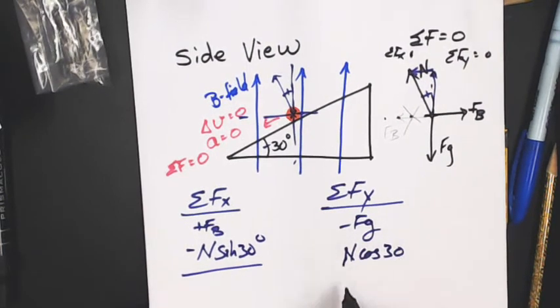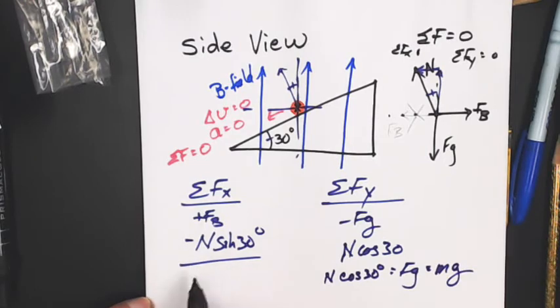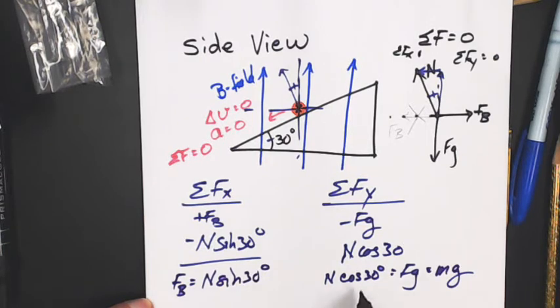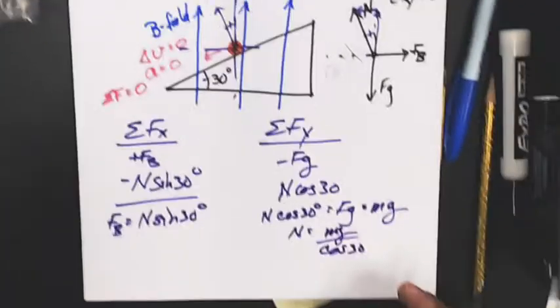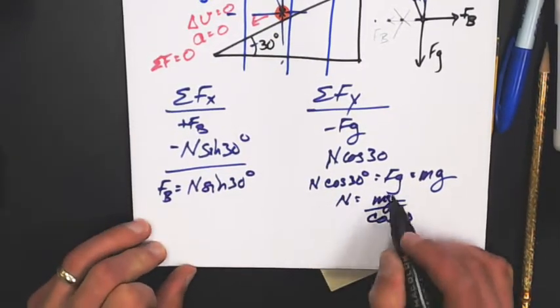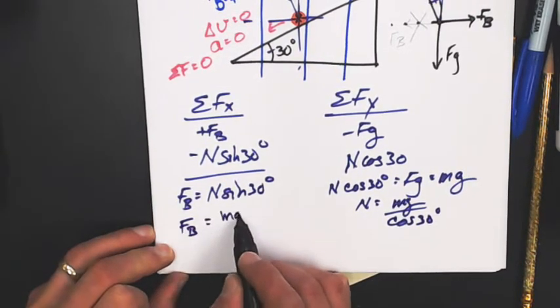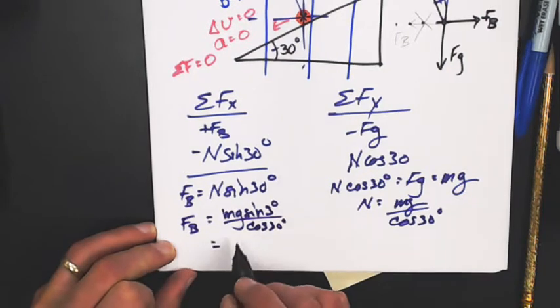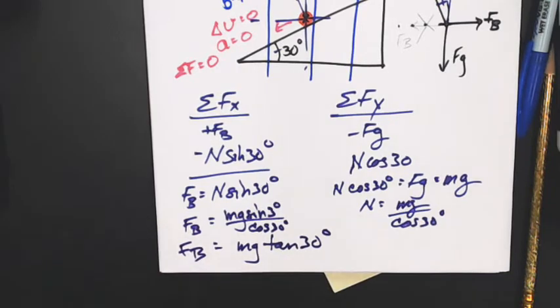So sum of the forces equals zero, N cosine 30 equals FG, which is going to equal the mass times G. Then FB, the magnetic force is N sine 30. N is Mg divided by the cosine of... Oh, I can't see that anymore. Normal force is Mg cosine 30. So we're going to plug it into the magnetic force is Mg sine 30 over cosine 30. This turns into Mg tan 30 is the magnetic force.